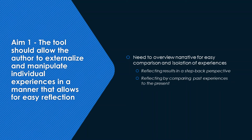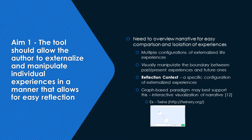Our first design aim was that the tool should allow the author to externalize and manipulate individual experiences in a manner that allows for easy reflection. The codes shown indicated the need to overview the narrative in a way that allows for easy comparison and isolation of relevant experiences. We found that reflection often involves the pairing of experiences in causal terms. In interactive stories, causal relationships between events are common, though in reflection the same memories may be restructured or reused depending on the topic of reflection. Thus, the tool should allow the author to create multiple configurations of life experiences, connected differently based on the context of reflection, and be able to visually manipulate the boundary between past, present, and future experiences.